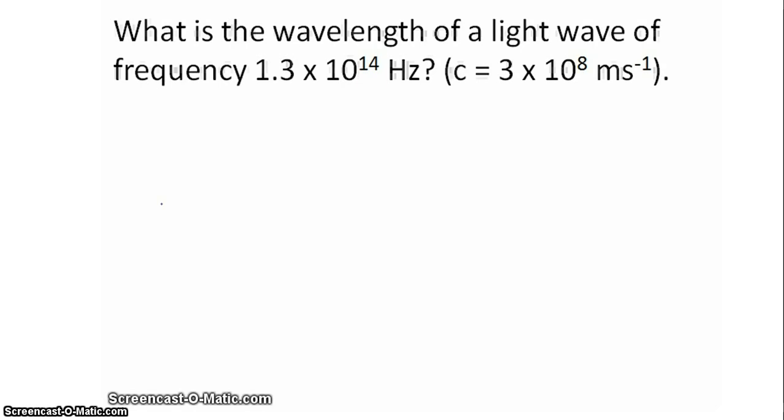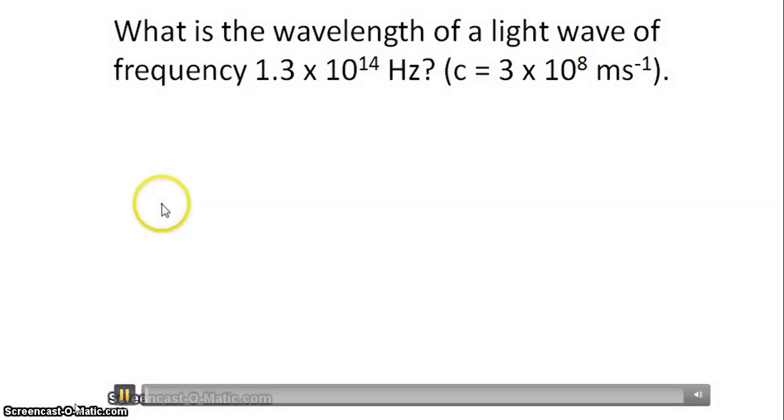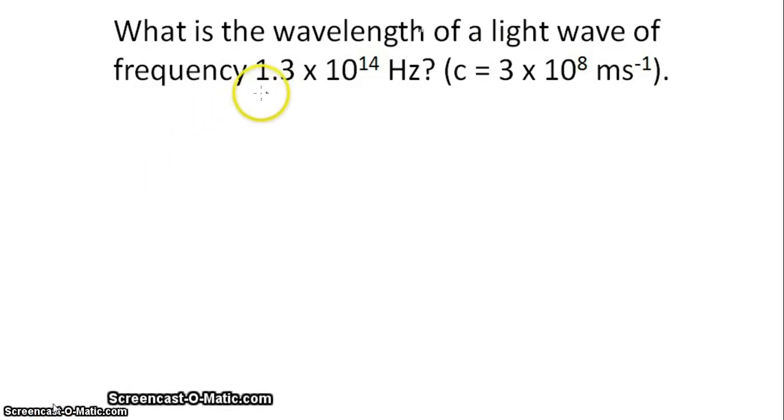So let's put all this together with a couple of example questions. To start off with a simple one involving the wave equation and rearranging. We're given the frequency of a light being 1.3 times 10 to the 14 hertz. And we know that since it's an EM wave it has a velocity of 3 times 10 to the 8 metres per second.